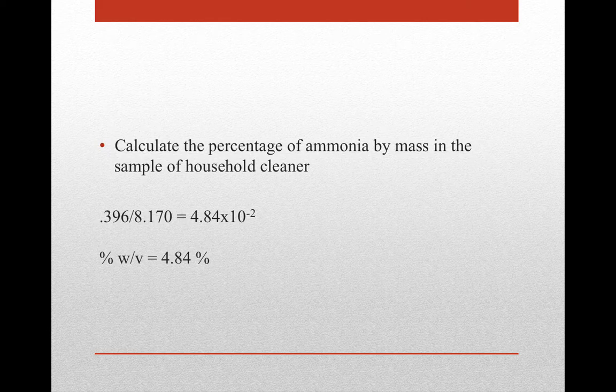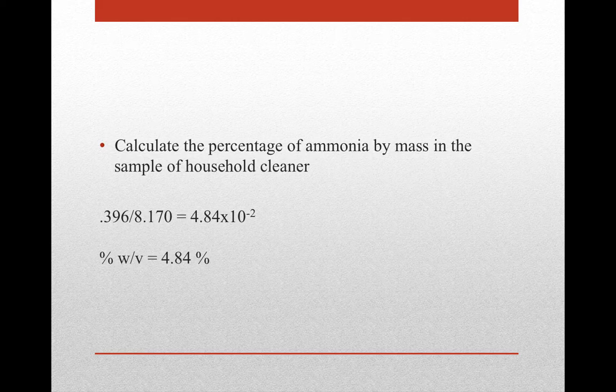That's how we approach a back titration. We didn't directly know how much ammonia was in the household cleaner, but by titrating with an excess amount of HCl and then working out the excess HCl, we worked backwards to find the ammonia. This is why back titrations are important in analytical chemistry — they allow us to calculate quantities we could not otherwise directly determine.